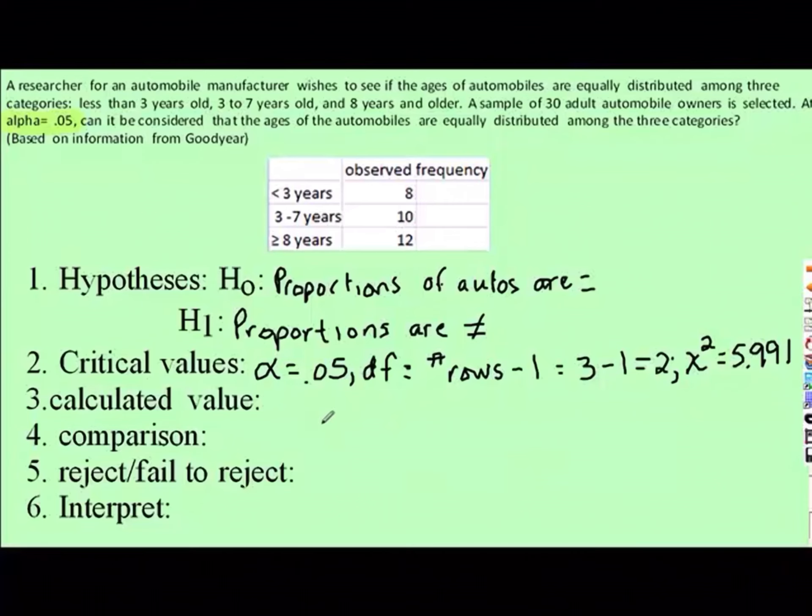Now I need the calculated value. To come up with the calculated value, I need what's called my expected value. That is, if I take all of my 30 people and divide that between my 3 categories, if they were equally distributed, they should each have 10. So 10 is my expected frequency. We'll call it E.